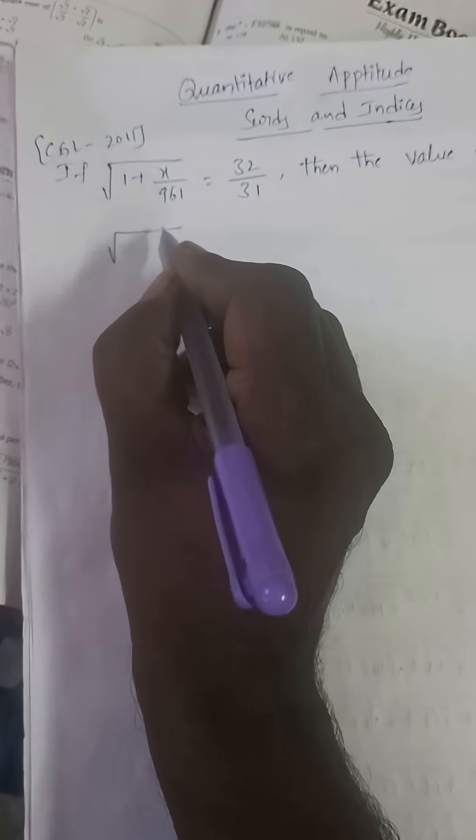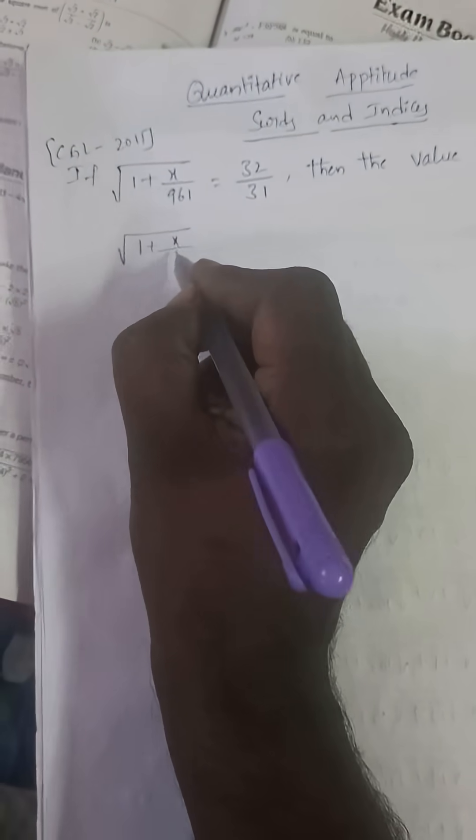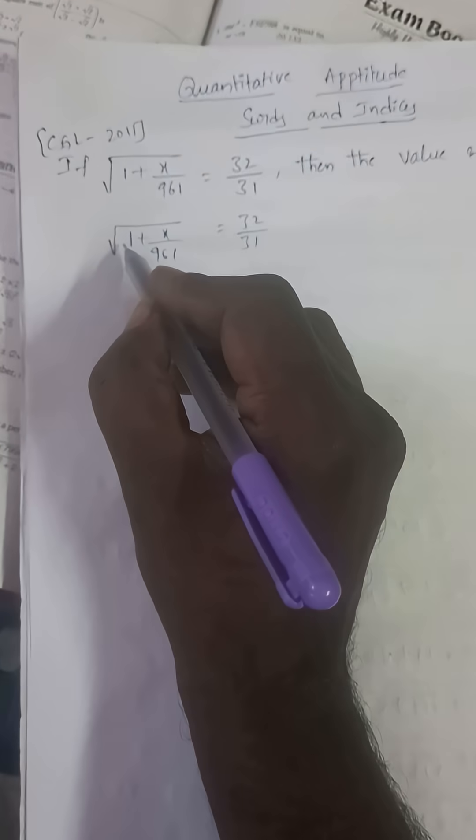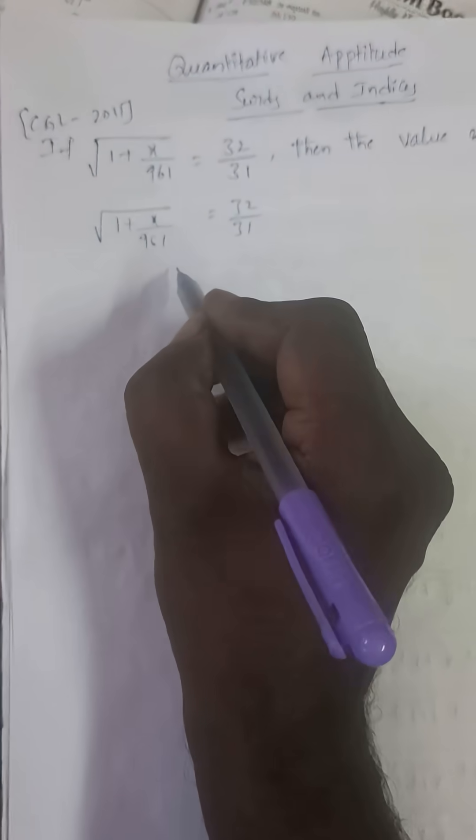So, square root 1 plus x by 961 is equal to 32 by 31. Square both sides.